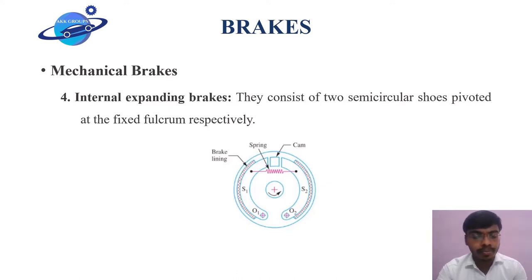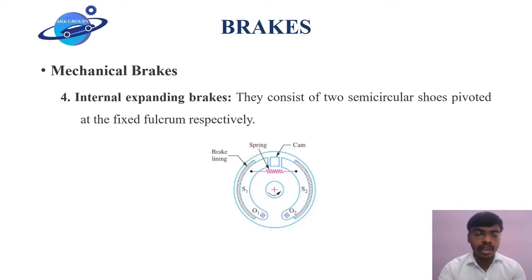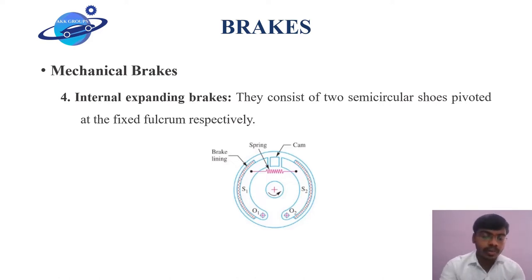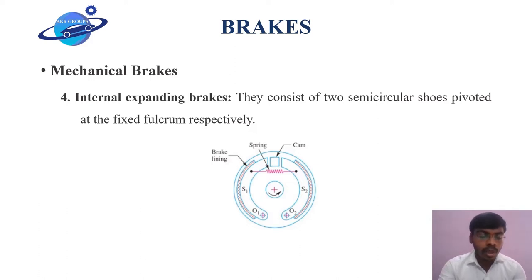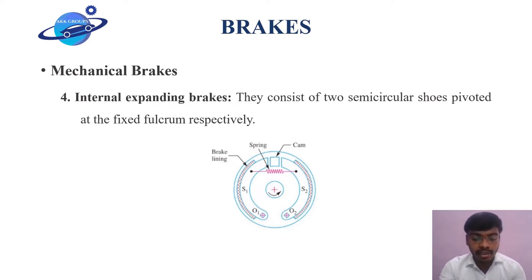of the drum. The friction between the shoe and the drum produces the braking torque, which reduces the speed of the drum. The shoes are normally held in the off position by a spring arrangement. The drum is enclosed to keep the entire mechanism free from dust and moisture.